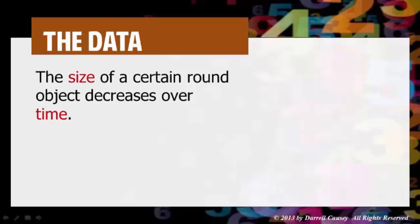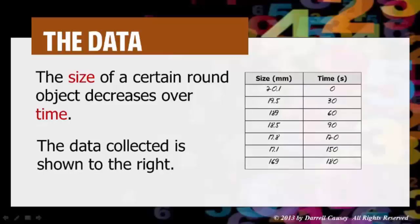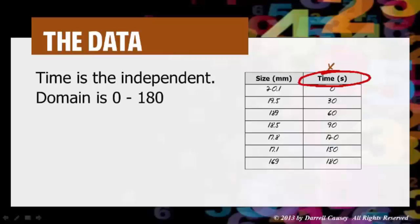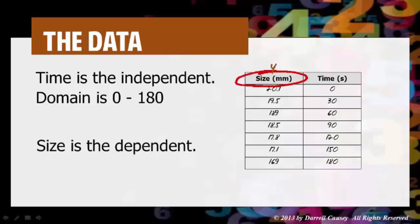The size of a certain round object decreases over time. The data collected is shown to the right. Time is our independent and therefore will be our x value and the domain is going to run from about 0 to 180. Our dependent is size which is in millimeters and we'll make that our y and the range is 16.9 to 20.1.